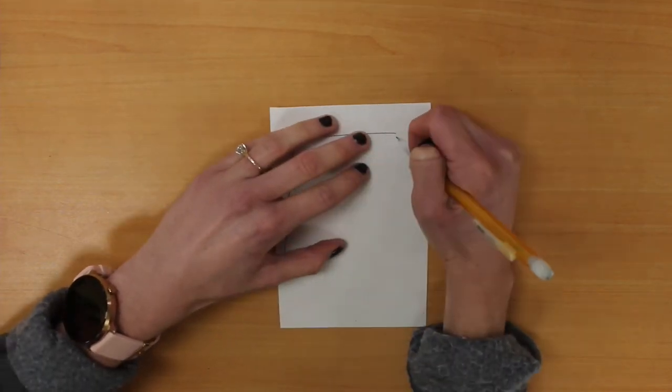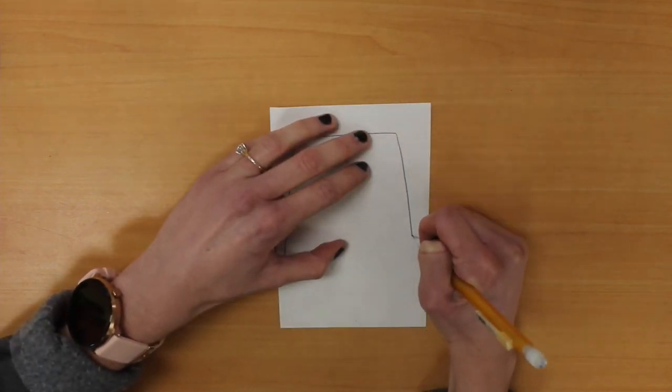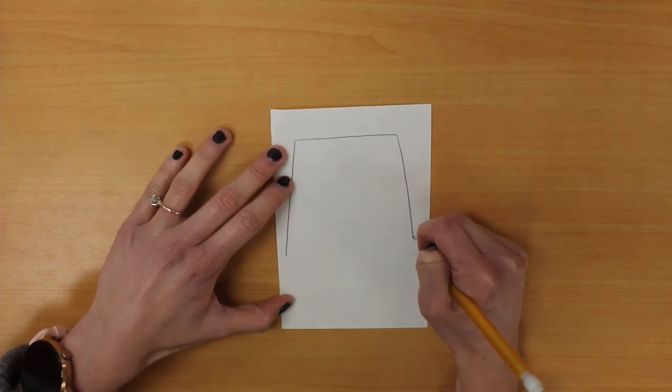Next, draw two vertical lines down on the side. These are going to be the outside parts of your sleeve.